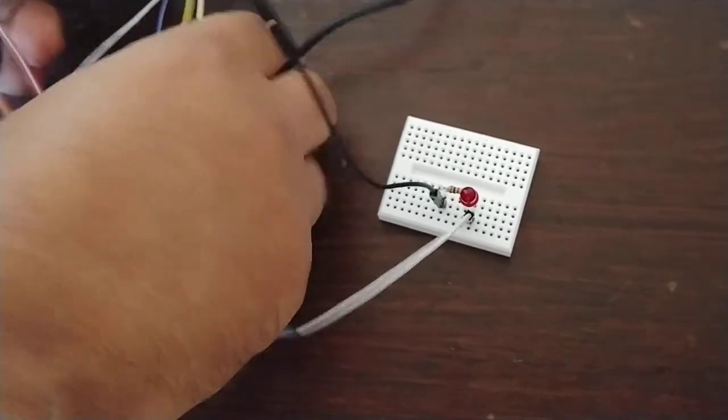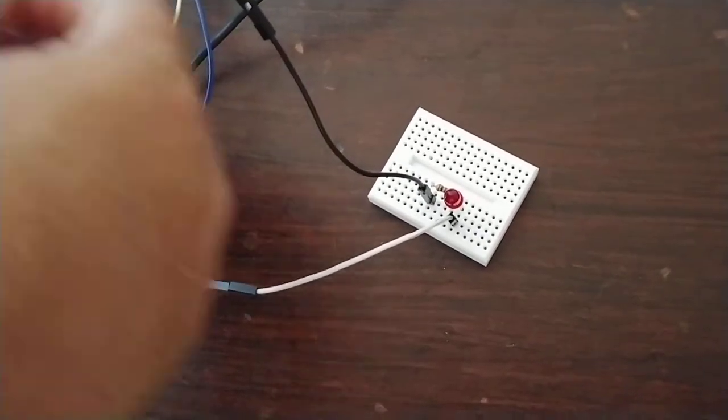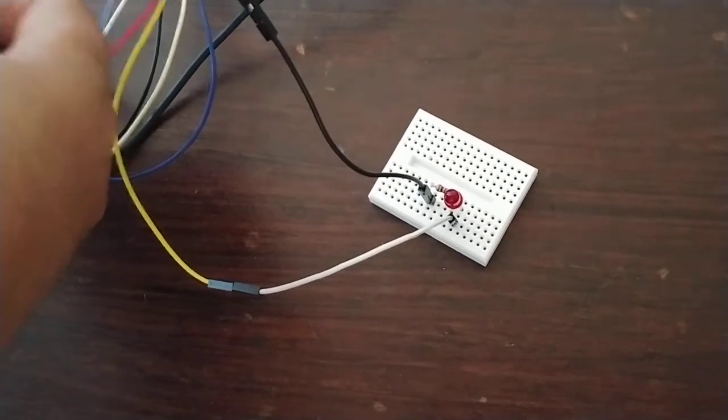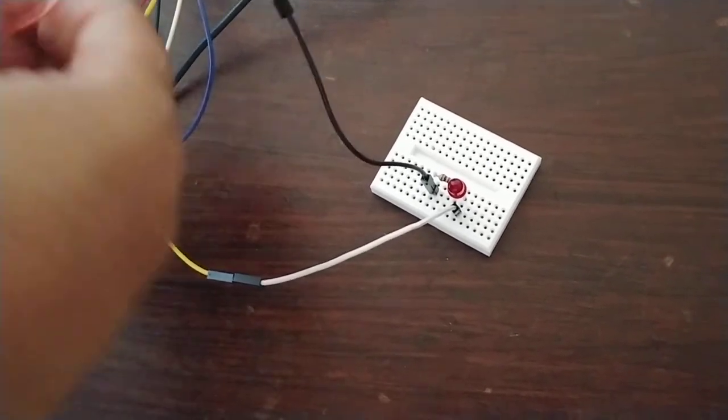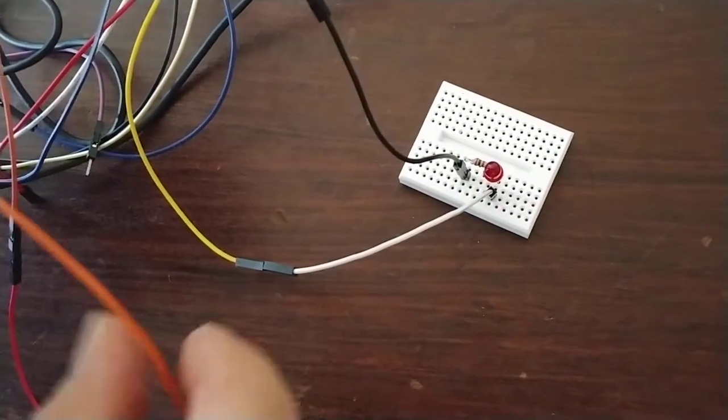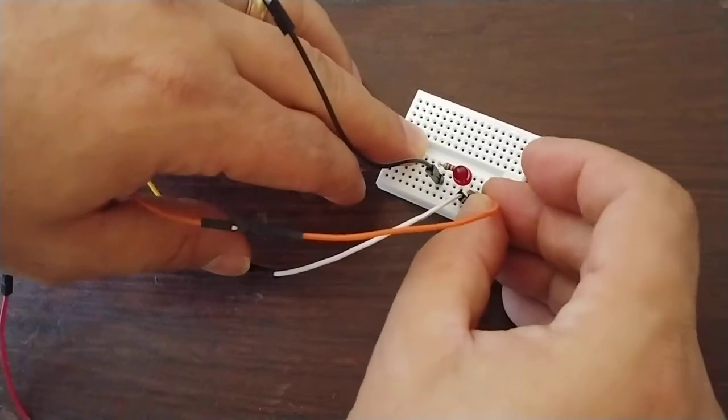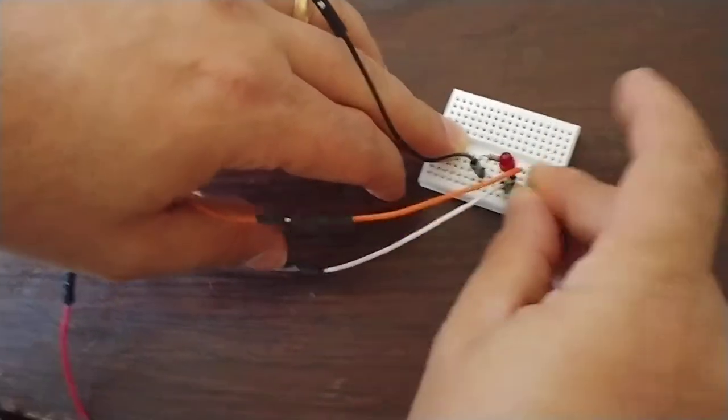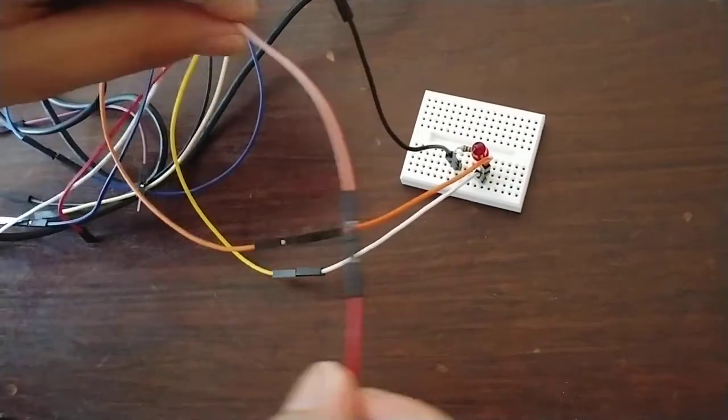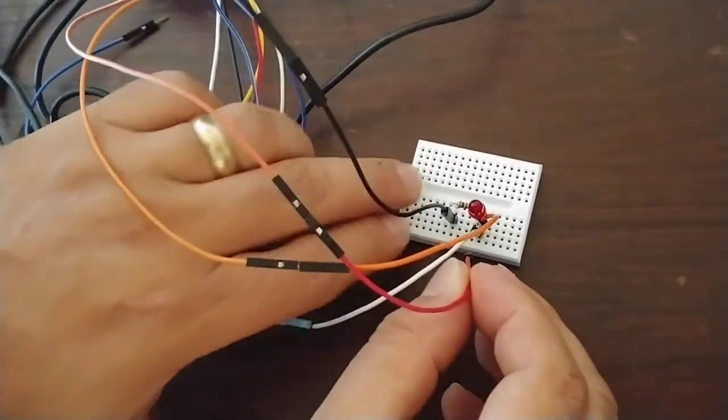Now channel 1, I'm going to want to measure the voltage across the LED. And so orange, this is W1 V1 positive. Orange with a stripe is V1 negative.